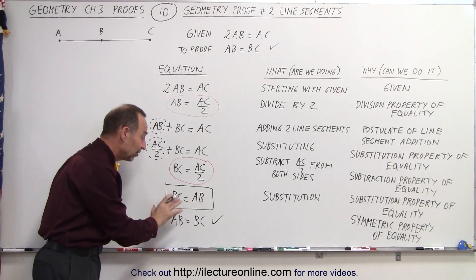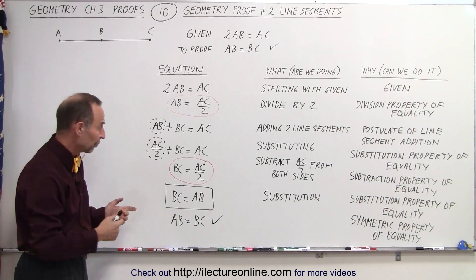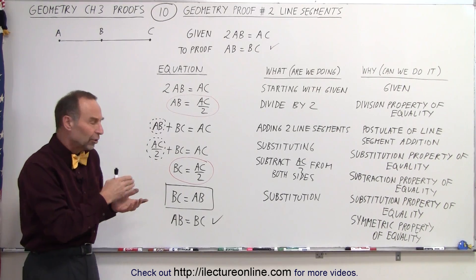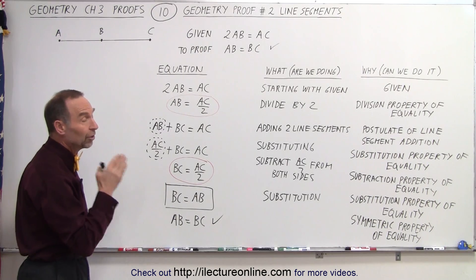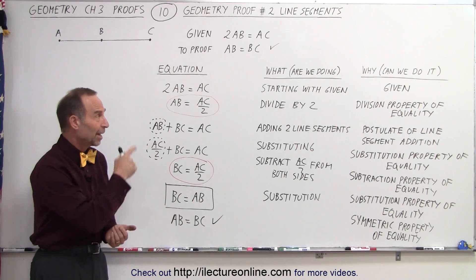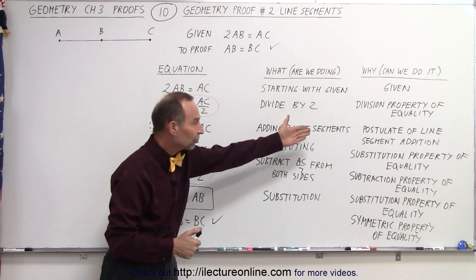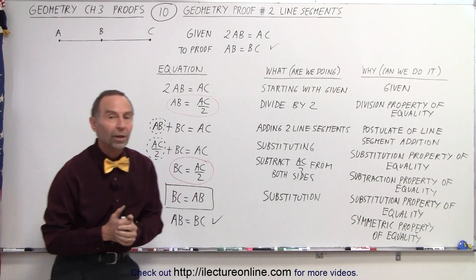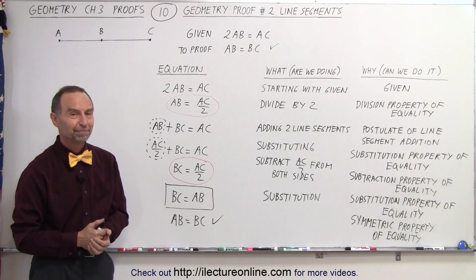Now, you might remember that this has another property name in algebra. If you studied algebra before, they call this the commutative property by moving things around like that as well. But in geometry, we call that the symmetric property of equality. And now we've proven this using, again, a combination of postulates and properties of equality to make our point. And that is how it's done. Thank you.